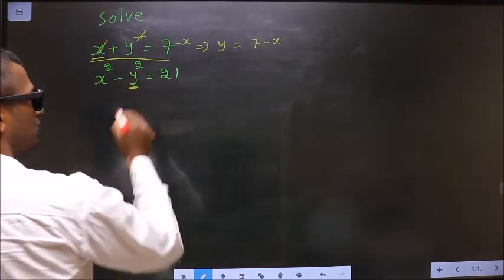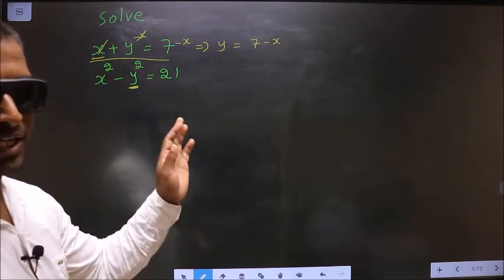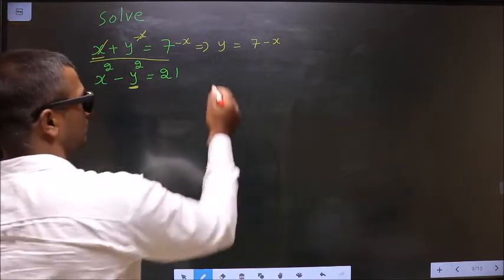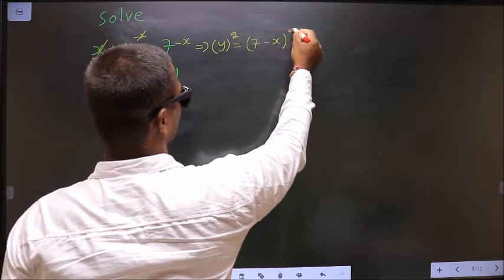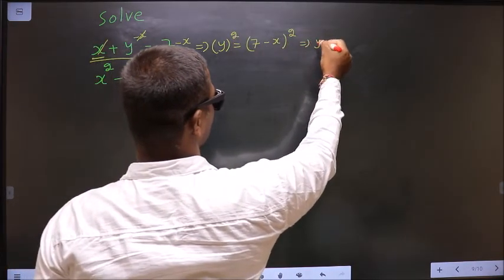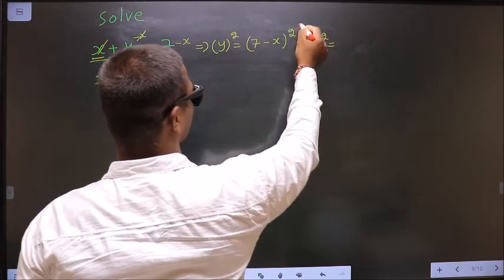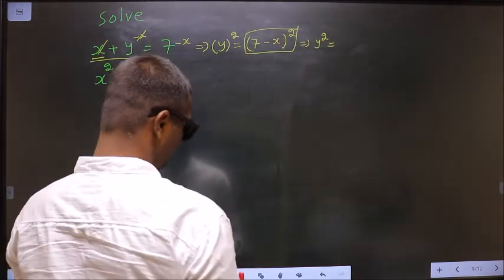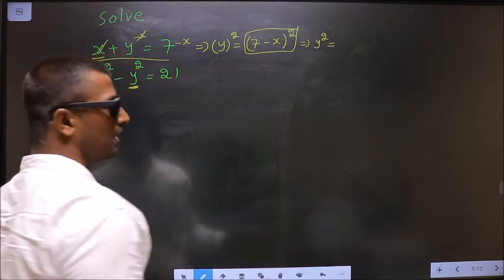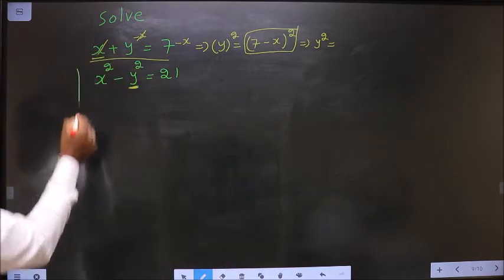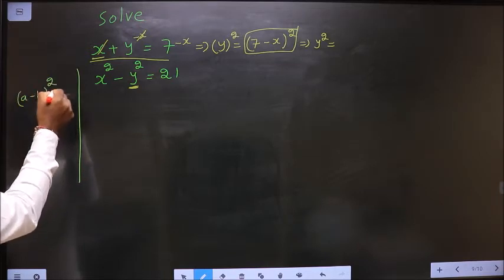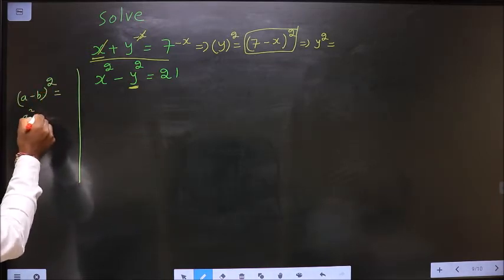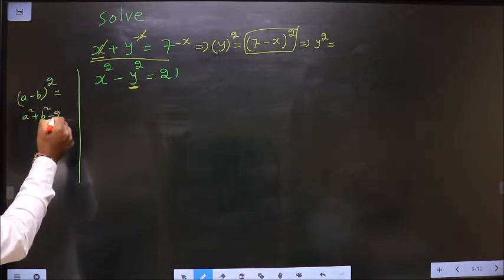So now to get y square, I do square on both sides. So that will result in y square equal to... This you should expand by making use of the formula a minus b whole square, which is nothing but a square plus b square minus 2ab.